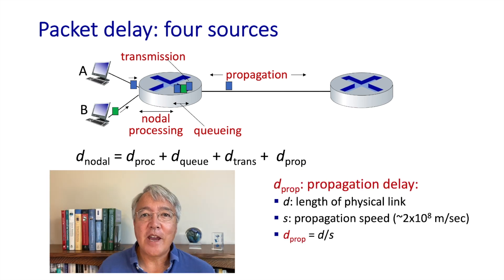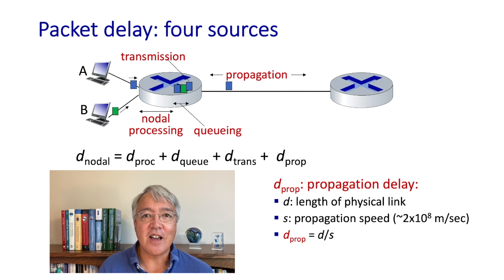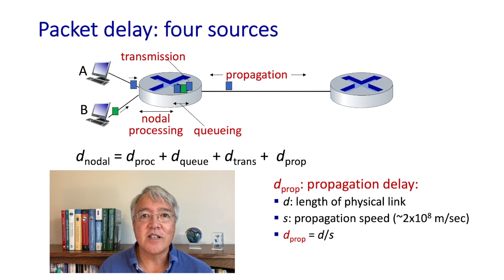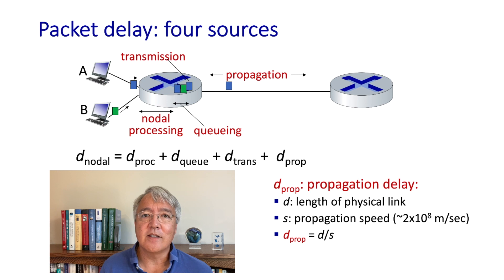Finally, there's propagation delay. This is the amount of time it takes from when a bit first enters the sending side of the link until it pops out at the receiving side of the link. Bits generally propagate through media at close to the speed of light, but you can actually notice propagation delays. For instance, the amount of time for a bit to travel from Earth up to a geosynchronous satellite is 270 milliseconds. For a transatlantic link from the east coast of the United States to Europe, that's on the order of 30 milliseconds. These delays can become quite noticeable.